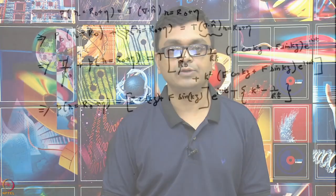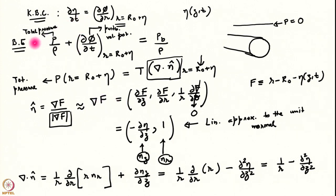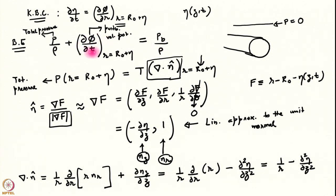We have seen the linearized Bernoulli equation earlier — we already wrote it down in the previous class. The linearized Bernoulli equation has the quadratic term missing because we have linearized it. Notice that the Bernoulli constant here is not zero; this is because the linearized Bernoulli equation is applied at the free surface, and the Bernoulli constant has been determined by applying the Bernoulli expression in the base state, where the velocities are zero and we are left with pb/ρ.